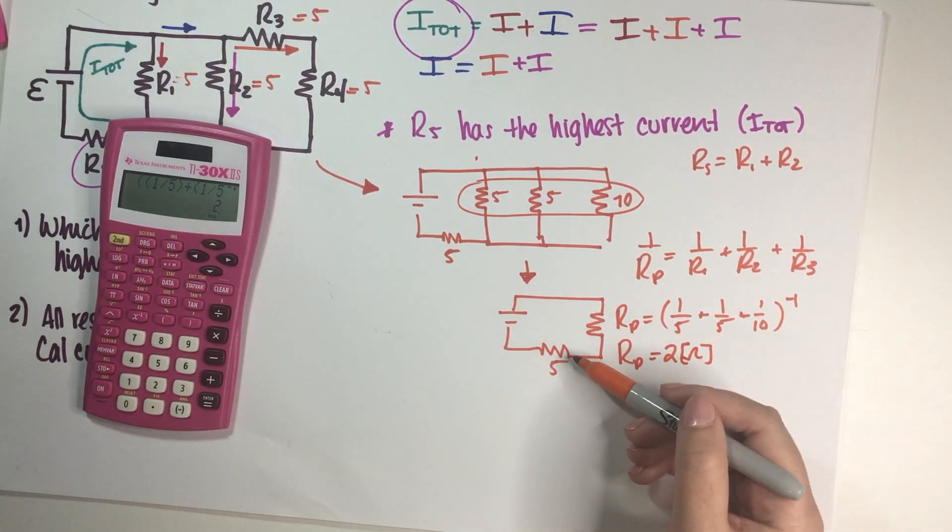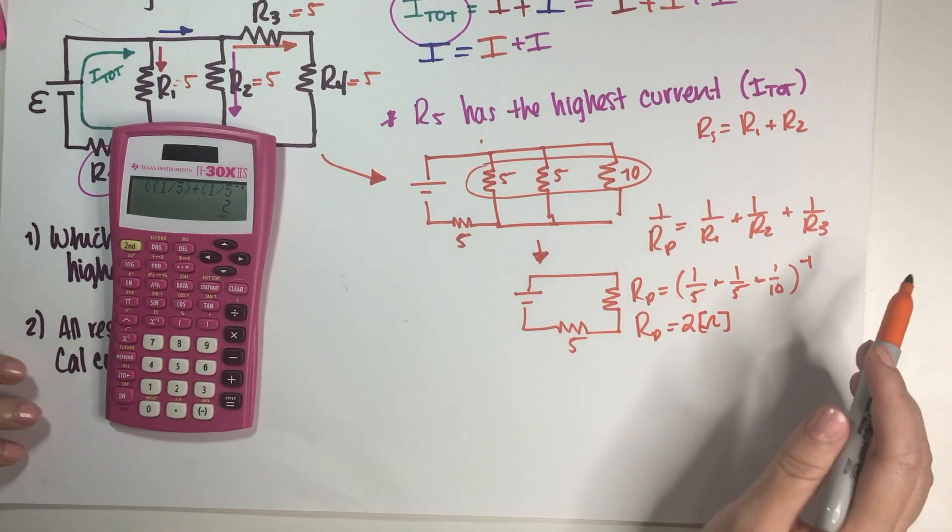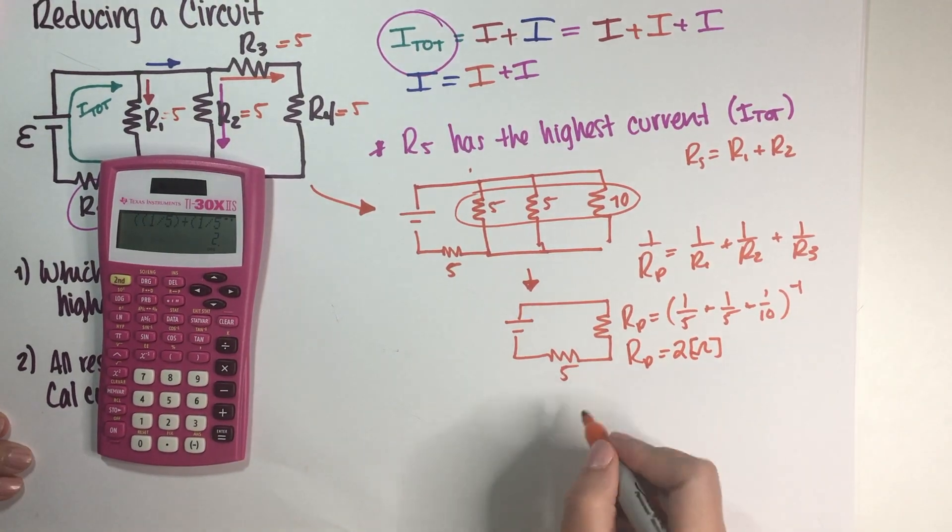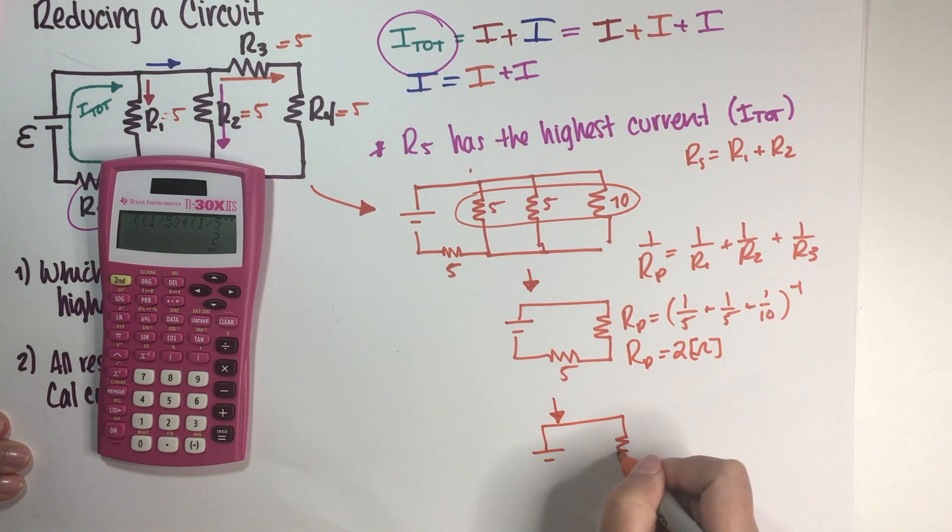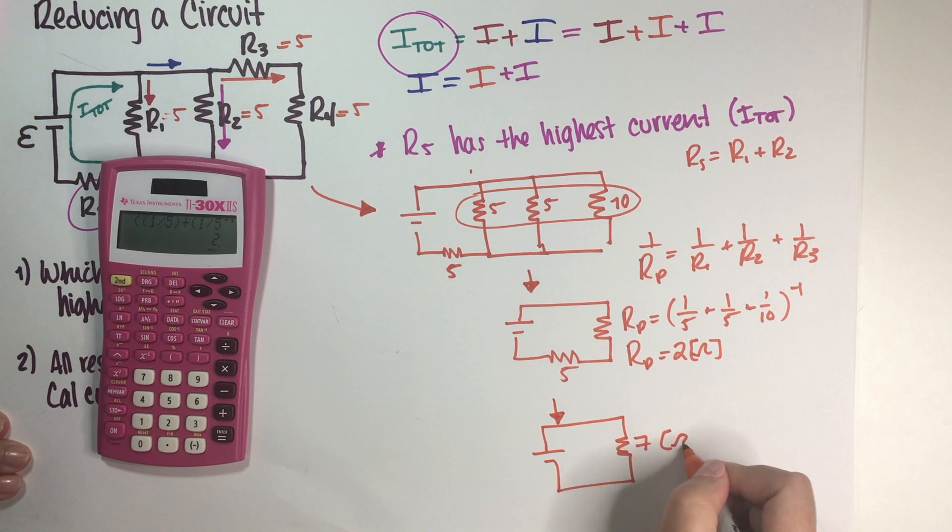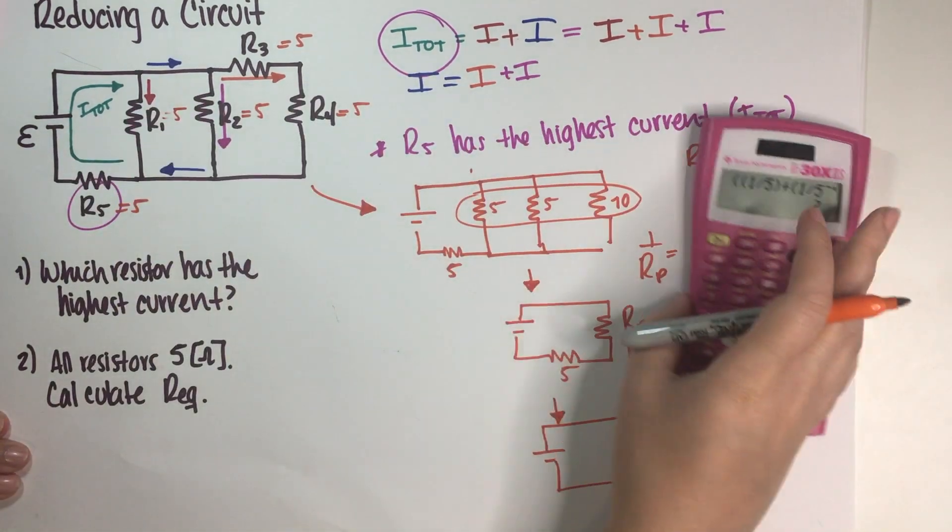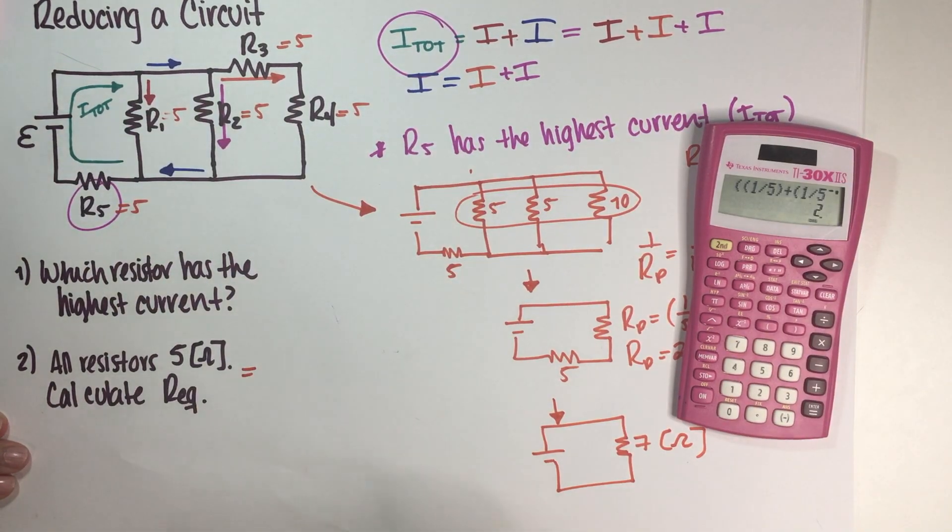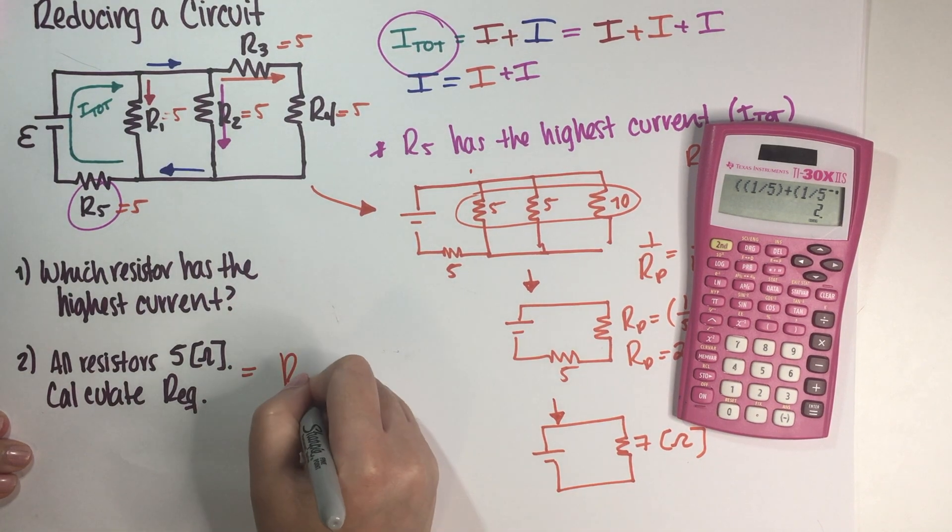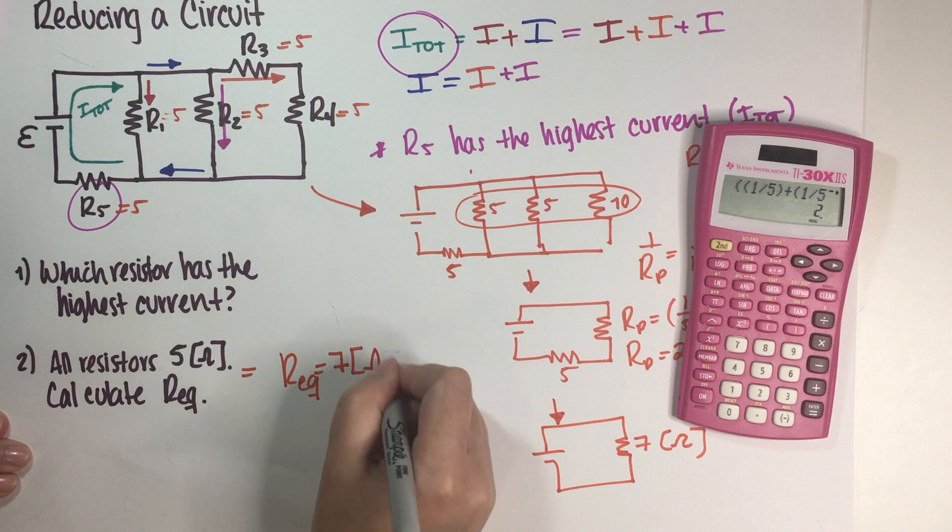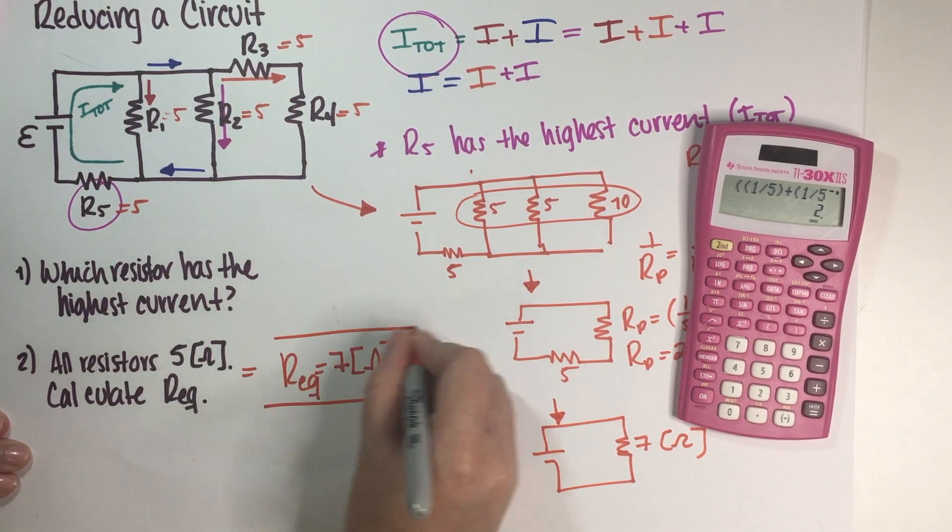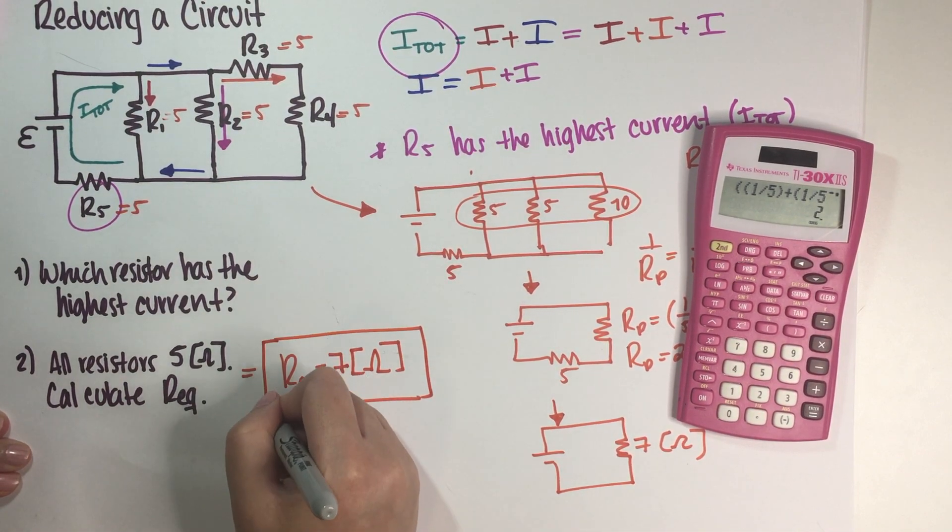And now these two are in series with each other, which means that basically we just add them up. So our reduced circuit is just 5 plus 2, which is 7 ohms. So our final answer is that R equivalent is equal to 7 ohms. Final answer.